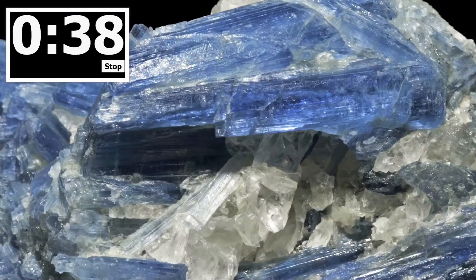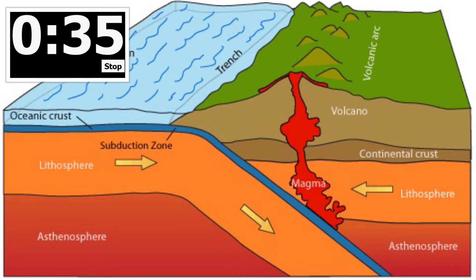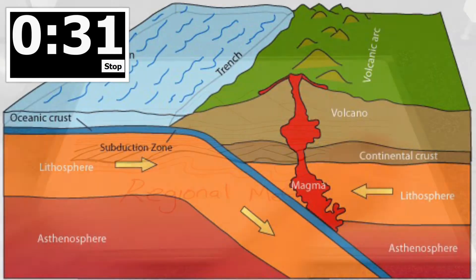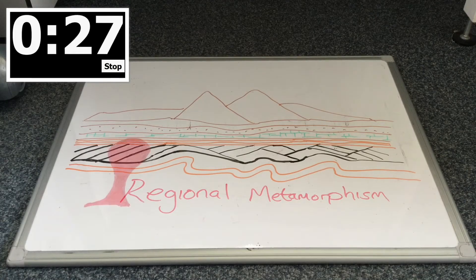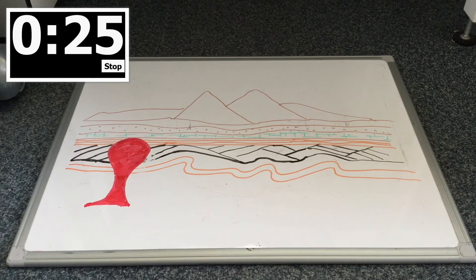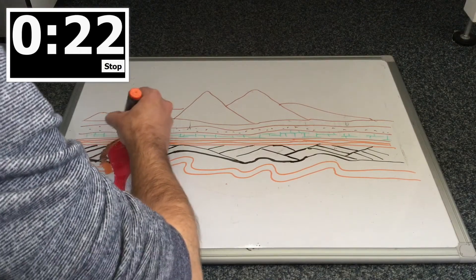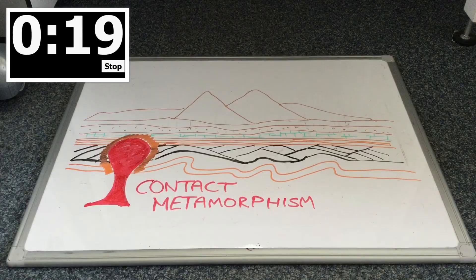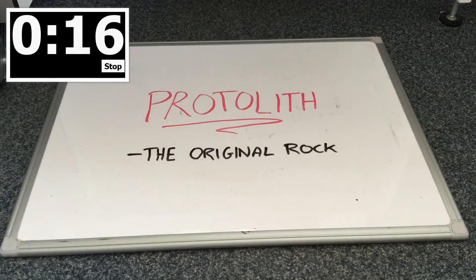Metamorphic rocks therefore form deep in the Earth's crust or around plate tectonic movement. This type of metamorphism is called regional metamorphism. Metamorphic rocks can also be formed when rocks come into contact with or are close to magma and so get heated up. This is called contact metamorphism.